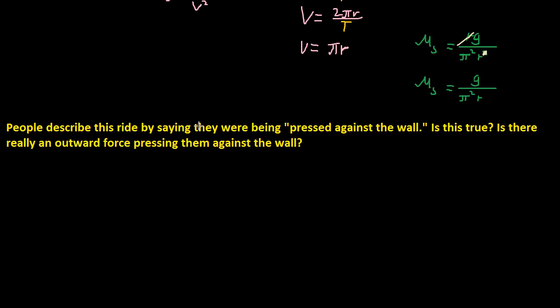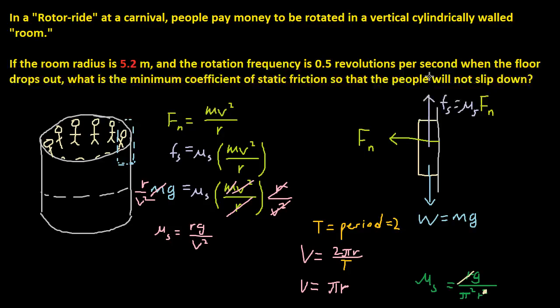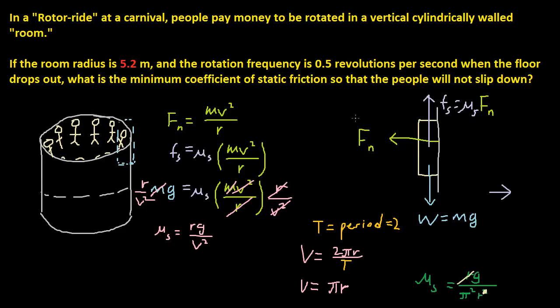People describe this ride by saying that they were being pressed against the wall. Is this true? Is there really an outward force pressing them against the wall? Well, let's look at our free body diagram. Is there any force that's going in this direction? Well, no. Because there's only weight, force of friction, static friction, and normal force acting this way.